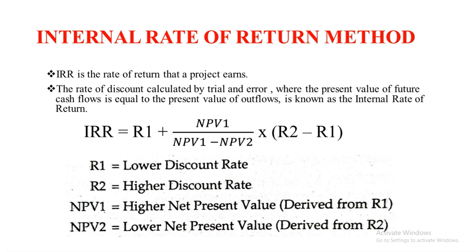So we'll have two different rates. NPV1 is the higher net present value derived from R1. NPV2 is the lower net present value derived from R2. So we'll have to find two NPVs here, and two rates will be given to us. We'll find the net present value for the two different rates given and then just apply them into the formula. Now let us see how to solve the sum based on IRR.